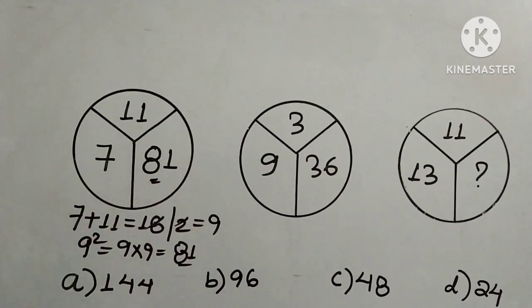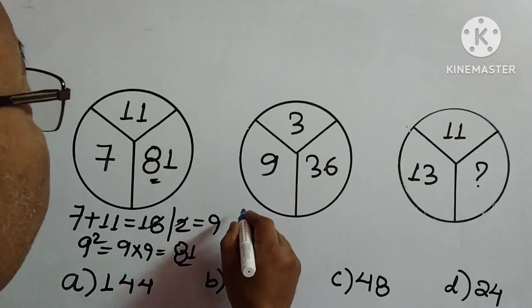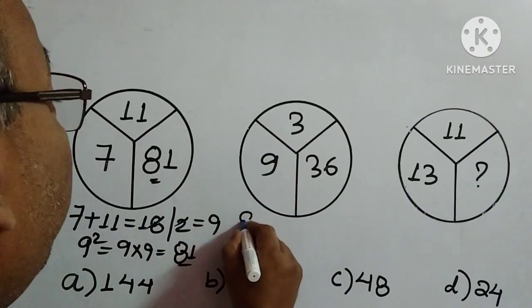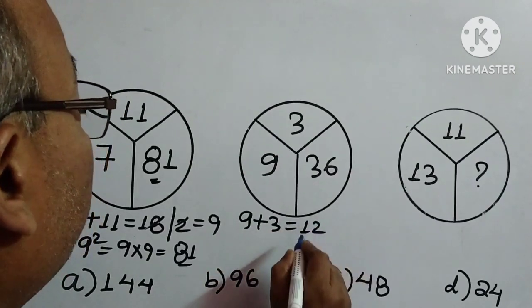81 is given over here. We will check whether the same technique is working in the second figure. So what we have to do? We will add 9 and 3, so 9 plus 3 is 12.